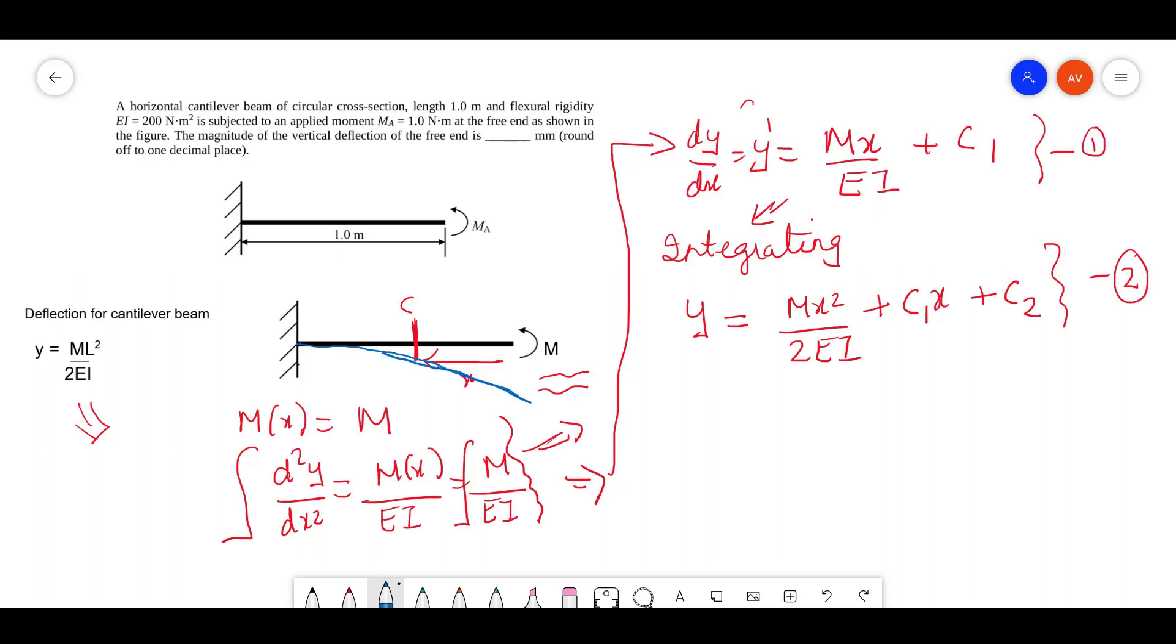At the fixed end, y and y dash are zero. That means at x equals L, the total length, you are going to get y equals y dash equals zero. So let's use this condition and solve it.